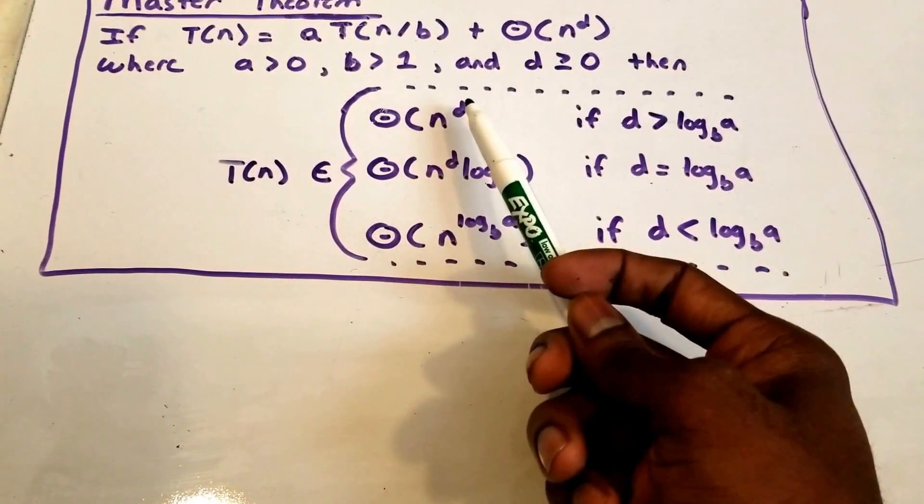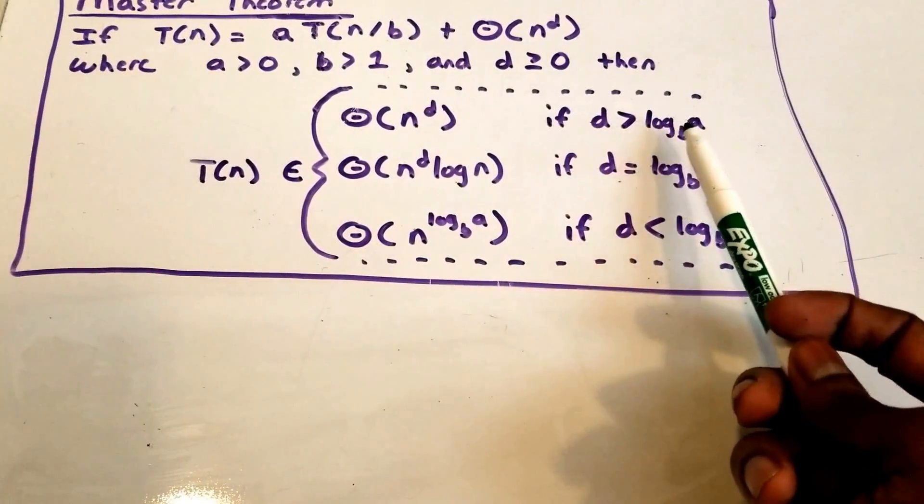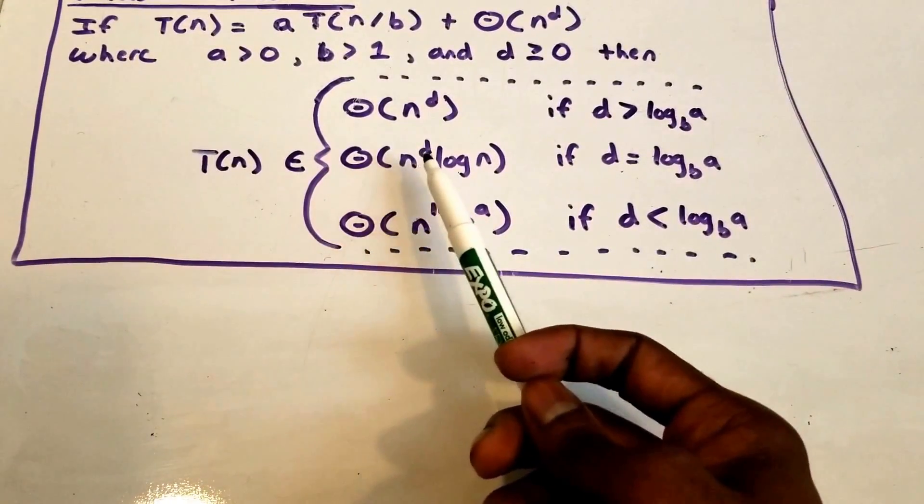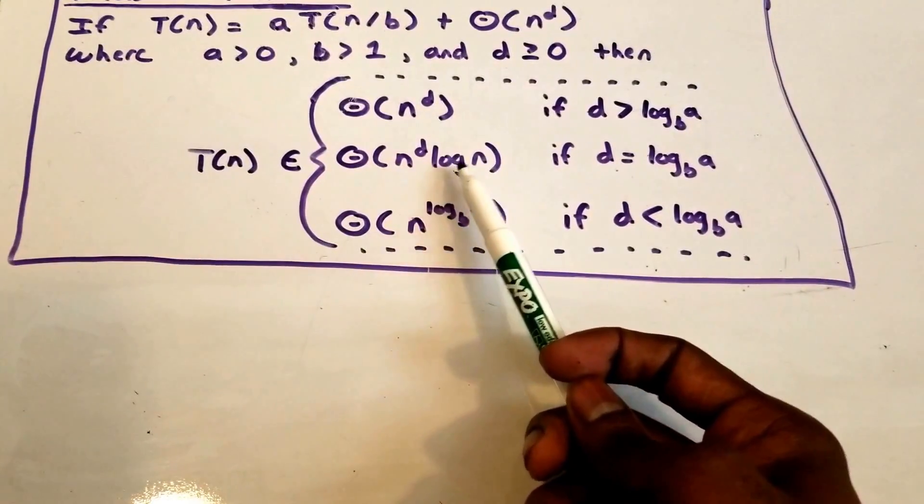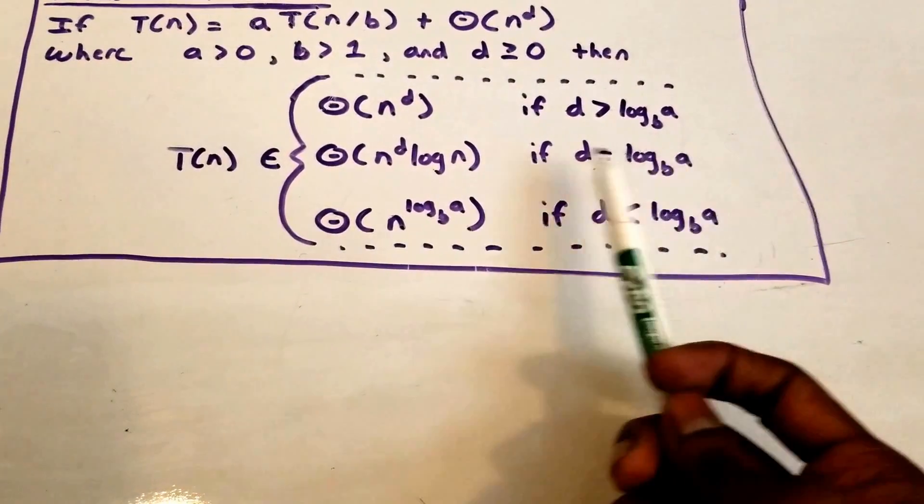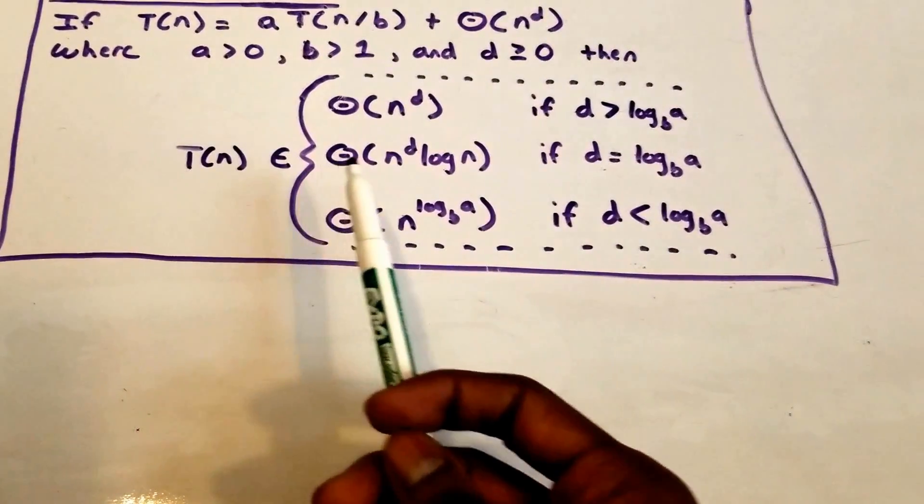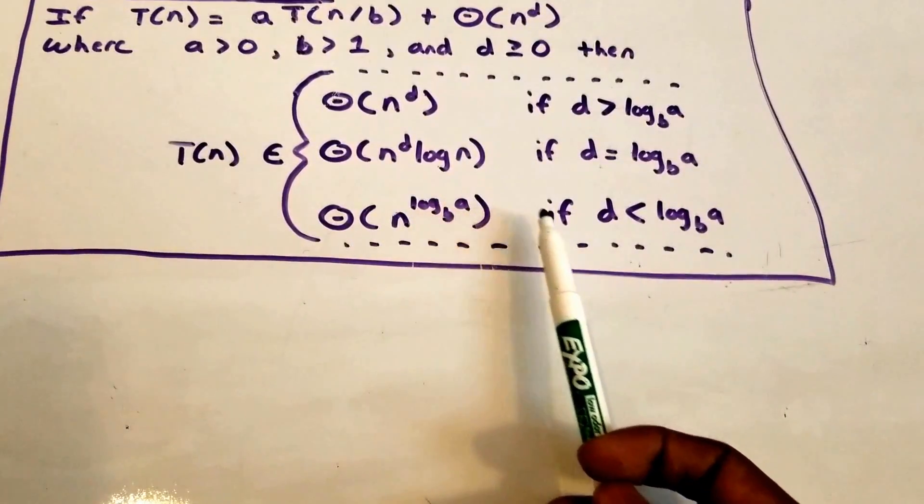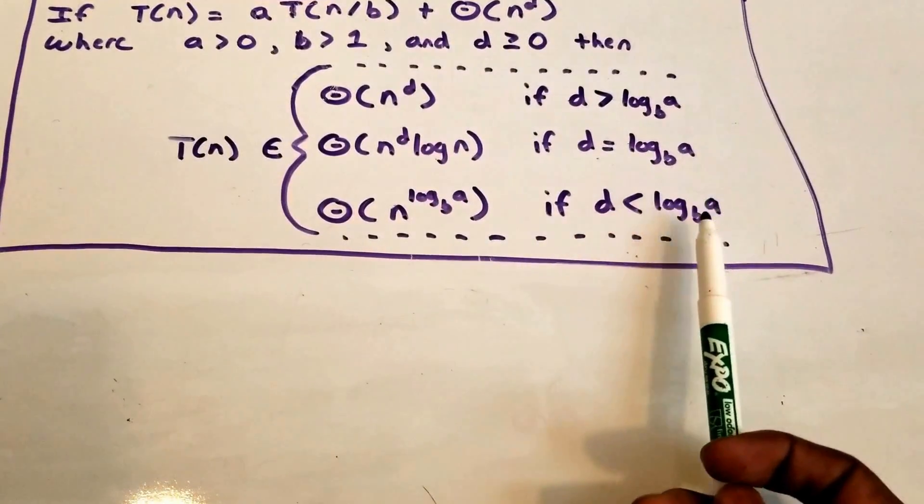big theta of n to the power of d if d is greater than log base b of a. Our function T of n belongs to big theta of n to the power of d times log n if d is equal to log base b of a. And our function T of n belongs to big theta of n to the power of log base b of a if d is less than log base b of a.